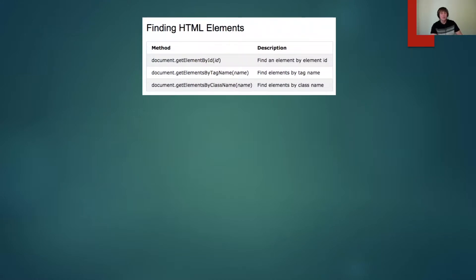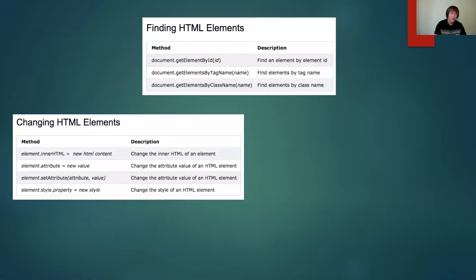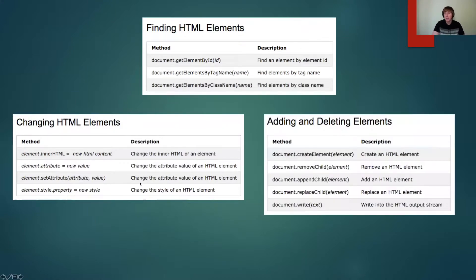Let's take a look at some examples. To find HTML elements, I can use getElementById — that's going to find one element. I could use getElementsByTagName — to find all paragraph tags, divs, or by class name, where multiple elements will return as an array. If I want to change HTML elements, I can change the innerHTML, change an attribute, set an attribute, or change the style of the HTML element. I can also add elements — create an element, remove a child, append a child, or replace a child.